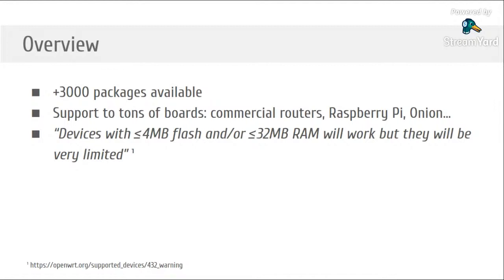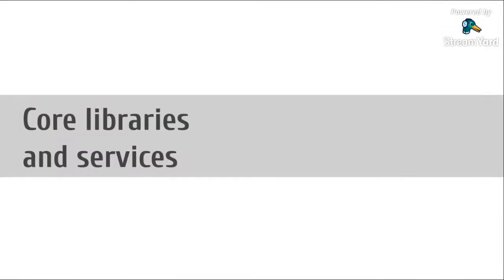Before trying to install OpenWRT on your devices, you need to be aware that it requires at least 4 megabytes of flash and 32 megabytes of RAM. With less flash you won't be able to install new packages, and with less than 32 megabytes of RAM you won't be able to run several servers and services reliably.